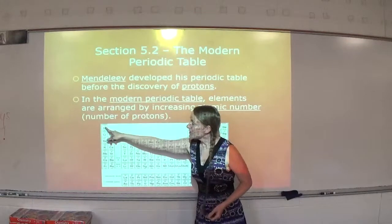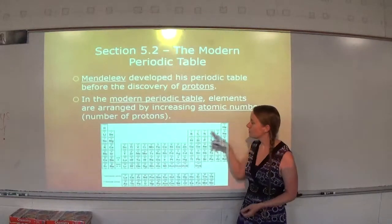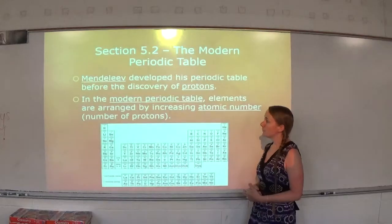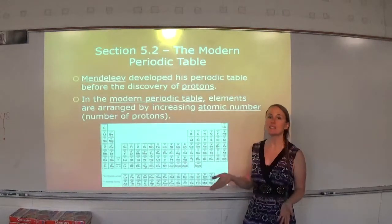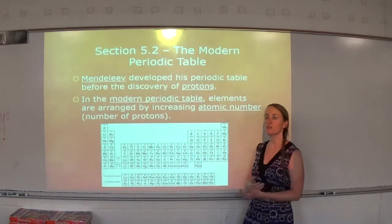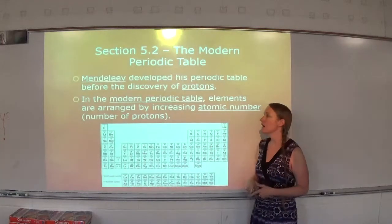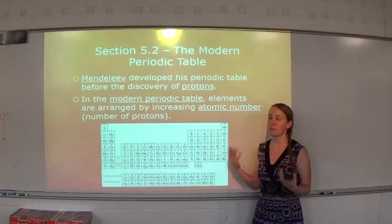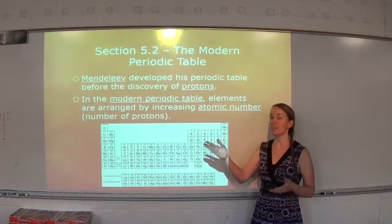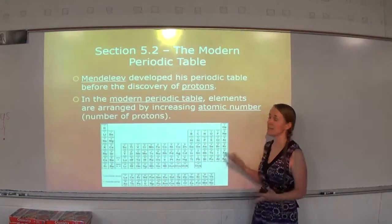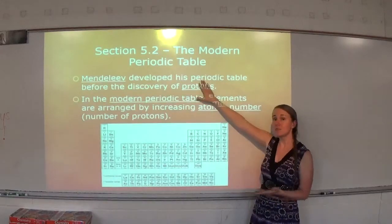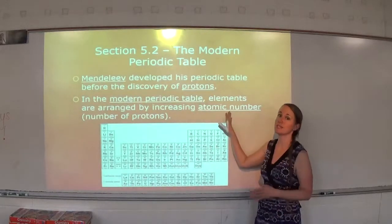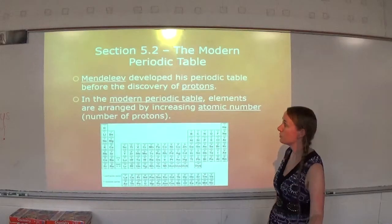The atomic number is the top number, so you'll see 1, 2, 3, 4, 5, 6, 7, all the way through about 118. Most of the masses are actually in an increasing order also, but there are some discrepancies. If you try to answer on a question that the modern periodic table is arranged by atomic mass because it looks like it is — because of those few discrepancies — that's wrong. Mendeleev arranged his by increasing atomic mass. Our modern periodic table is arranged by increasing atomic number, which is number of protons.